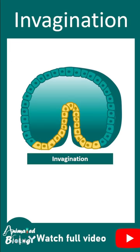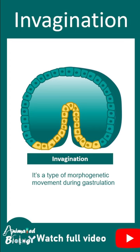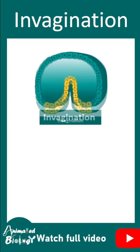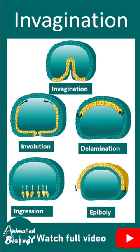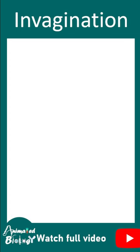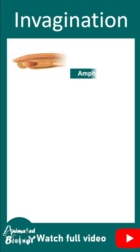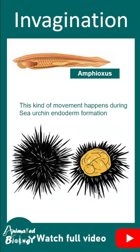Invagination is one type of morphogenetic movement among many other types that can possibly happen during gastrulation. Invagination is found in amphioxus and sea urchin, for example.